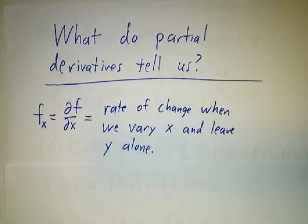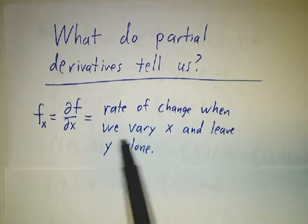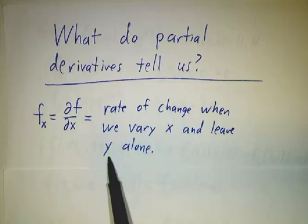A partial derivative is, just like any other kind of derivative, a rate of change. It's just that instead of thinking of a function of one variable, we make it a function of one variable by holding the other variable fixed.